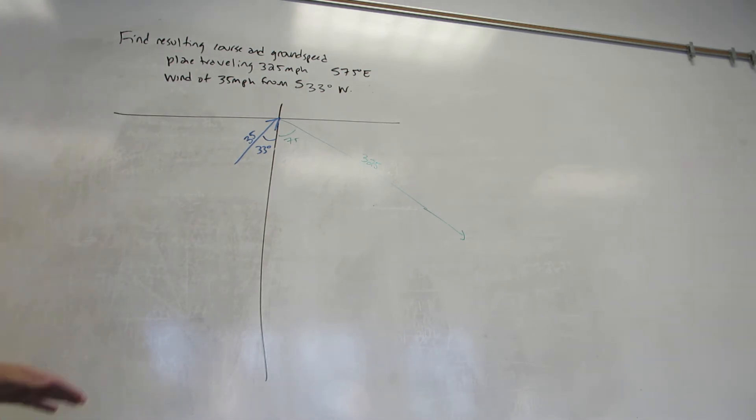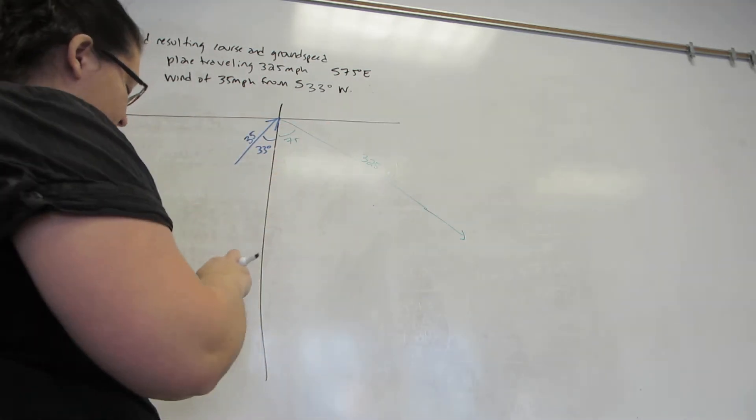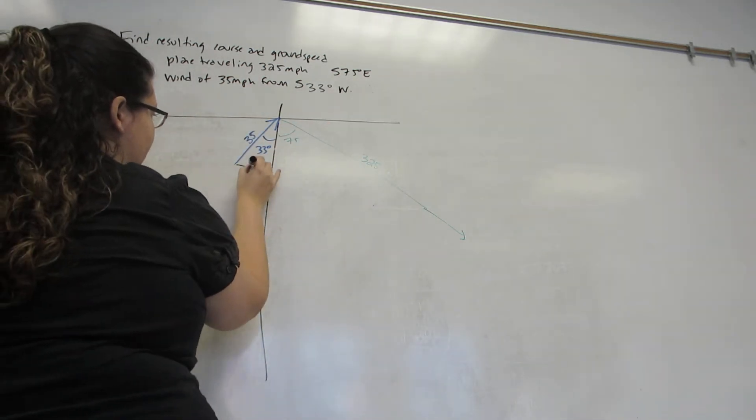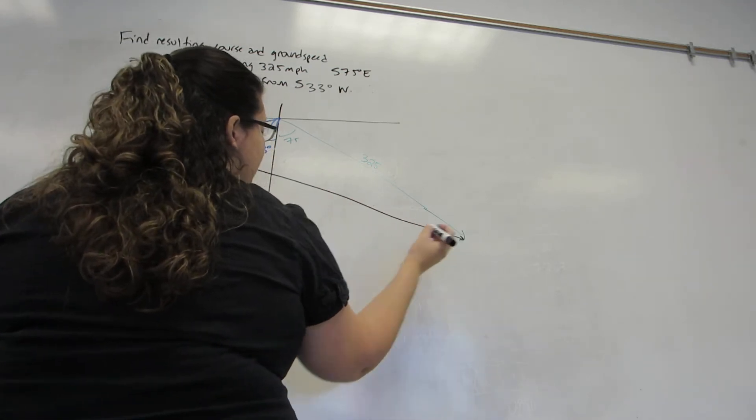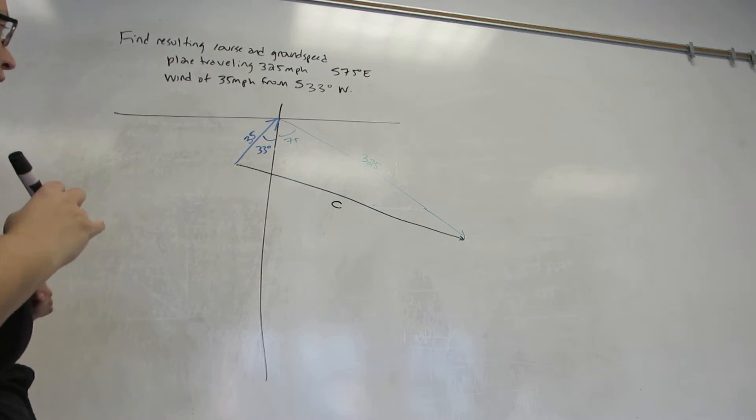Now remember that we must match the picture. I have wind tip to tail with airspeed, so ground speed must go from the tail of wind to the tip of airspeed. Let's call this side C. It's going to be our ground speed.